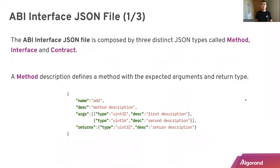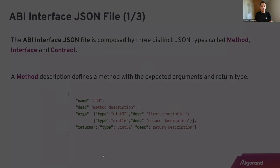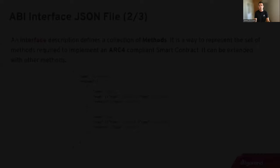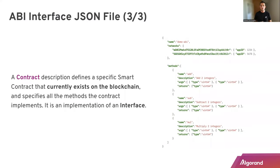So let's dig into the ABI interface JSON file. This is an outcome from ARC-4 and the standard provides a JSON with three core type elements, which are called method, interface, and contract. Method is basically the definition of a method in your smart contract and has a name, a description, the list of arguments that your method requires with types and description, and finally the return value. If we put together a list of methods, we have an interface which defines the baseline of an ARC-4 compliant smart contract. You can take an interface, extend it with other methods and deploy smart contracts on the blockchain. In that case you are building a contract, which is a description of a smart contract currently deployed on the blockchain. Usually a contract is an extension of an interface. Here we have a demo contract with three methods, deployed on two networks with different application IDs.